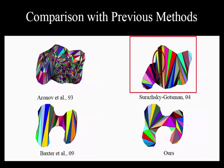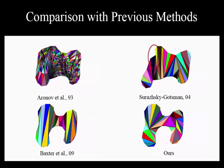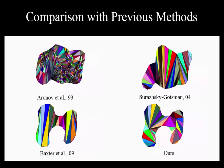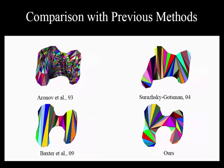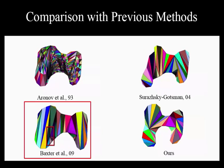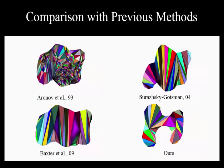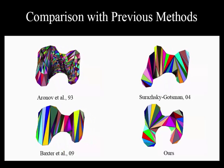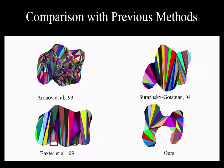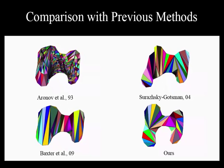Although Surazhsky and Gotsman's method introduces a small number of Steiner points, the long thin triangles still need to be improved. The mesh quality of Baxter et al. has been improved compared with previous methods. However, we can see that some skinny triangles may experience a big distortion that creates some artifacts for the transformation.